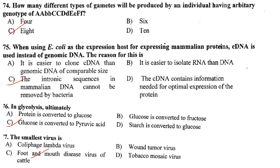How many different types of gametes will be produced by an individual having a given genotype? Count the number of heterozygotes in the genotype and use the formula 2 raised to n, where n is the number of heterozygous gene pairs. With three heterozygous pairs (Dd, Ee, Ff), 2 raised to 3 equals 8 gametes. Answer is option C.